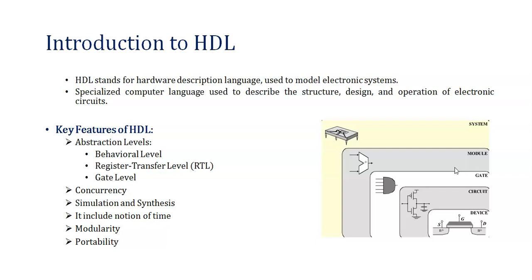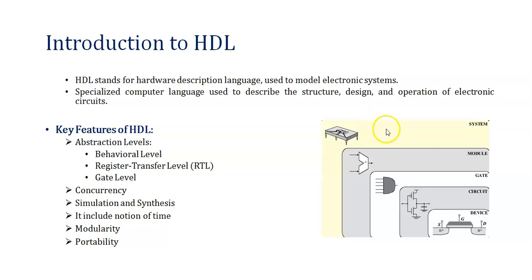HDL allows designers to model the behavior and structure of complex digital systems at various levels of abstraction — from high-level functional description to the low-level gate-level implementation. On the right-hand side there is a diagram showing an IC, and from the top and bottom side you implement it through PN junction connections. After that you implement the circuit, then certain gates, then models such as ALU and control unit. After integrating all these modules you design your microcontroller, which is the system — the final outcome. So from PN junction to IC design, implementing a microcontroller is the top-level model.